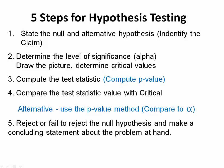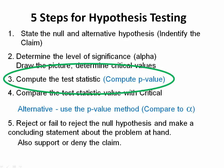In step five, we're going to make a concluding statement by rejecting or failing to reject the null hypothesis and make a concluding statement about the problem at hand. We're also going to support the claim. In this particular session, we're going to compute the test statistic and compute the p-value.